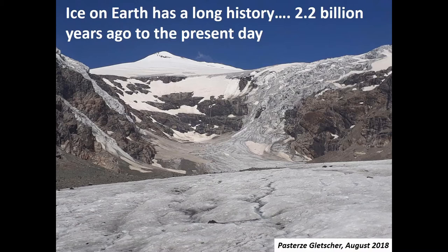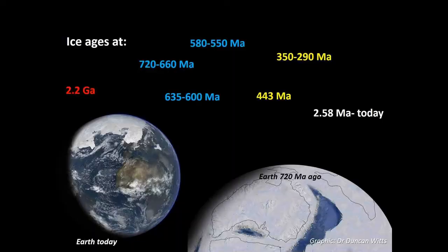This is not something that's happened just in the last 25,000 years. The history of ice on Earth is a long one, from about 2.2 billion years to the present day. We've got ice ages at 2.2 billion years with lots of ironstones — South Africa and Australia have many of those — and then a cluster of ice ages related to the Snowball Earth events. Then there are Paleozoic ice ages associated in Saudi Arabia with the Sara Formation at 443 million years and the Unayzah Formation at 350–290 million years.